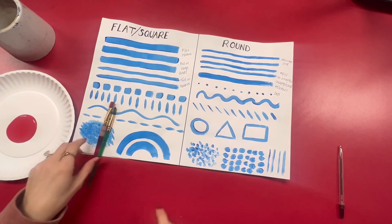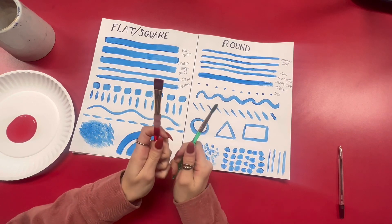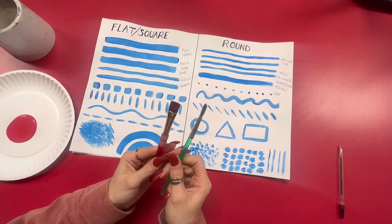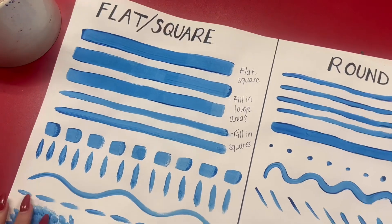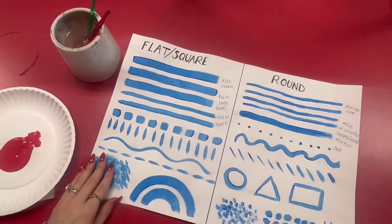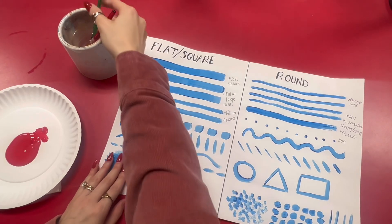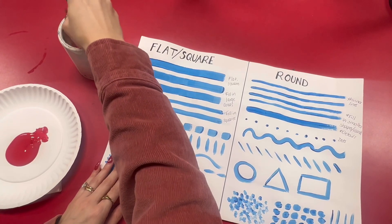Today we're going to be exploring the difference between a flat square brush and a round brush. So today we're going to do an activity where we're experimenting using a flat and a round brush.